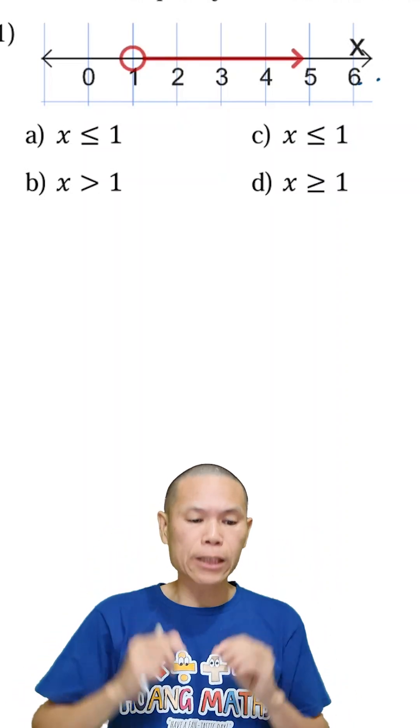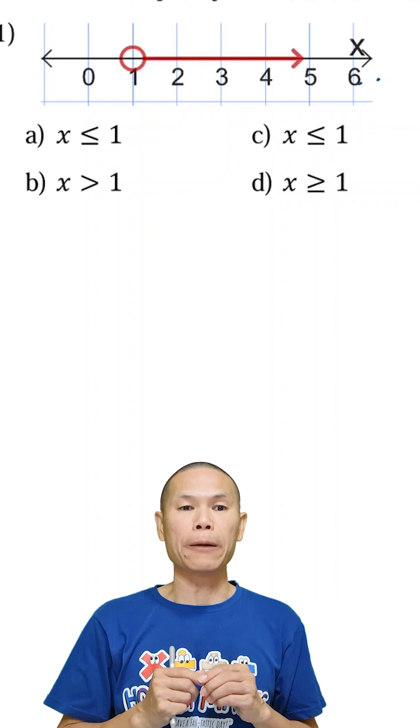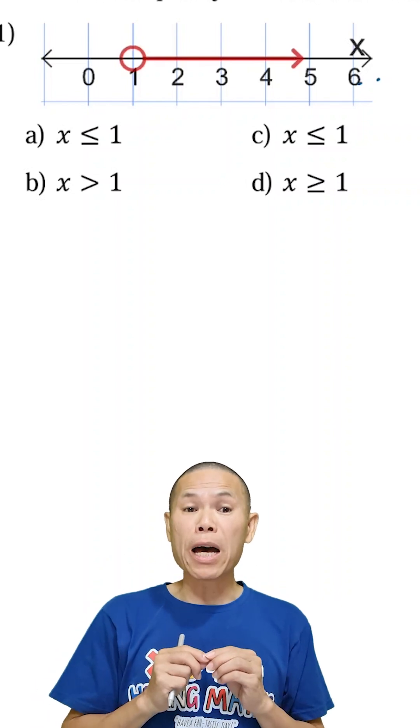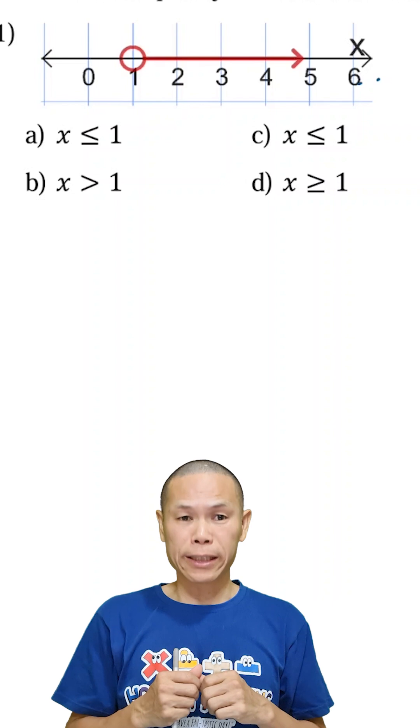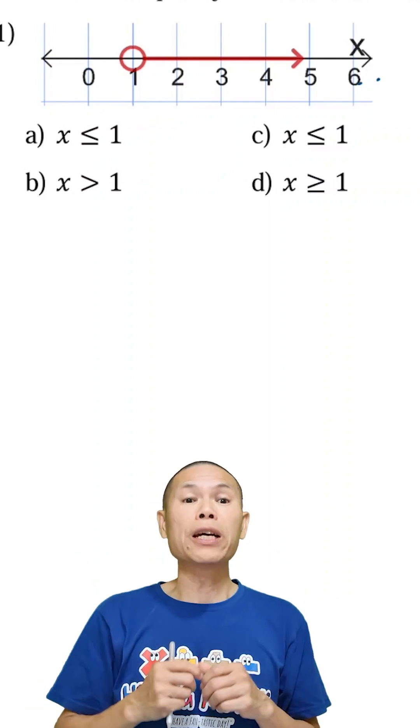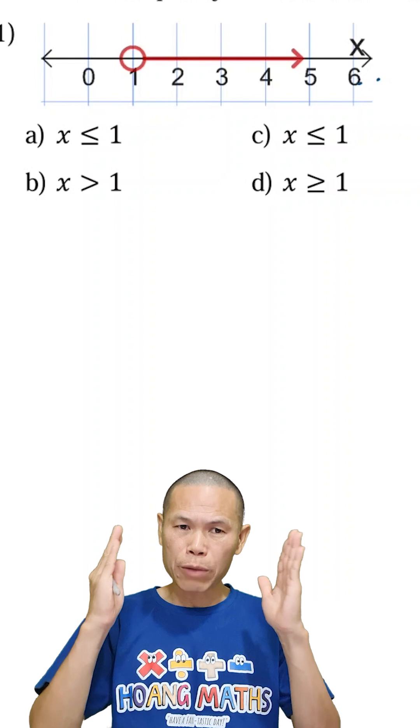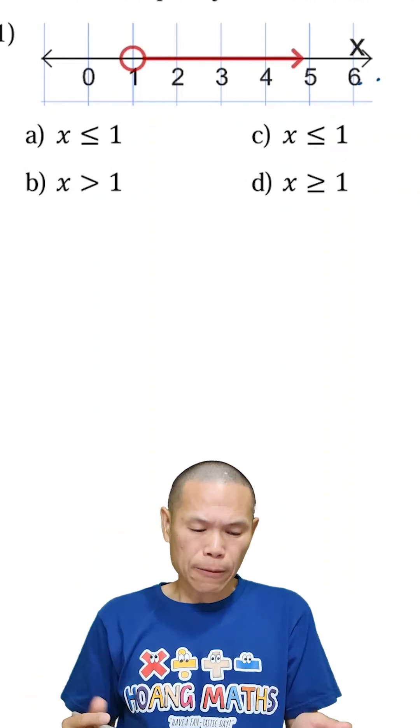The question is asking us to choose the inequalities that match the number line. We know that the number that's further to the right is the largest. In other words, the number that's further to the left, the smaller it is. Keep that in mind.